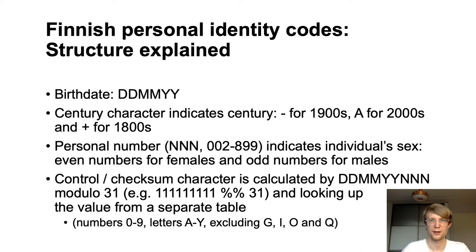The century character has three valid options: a dash for the 1900s, A for the 2000s, and a plus sign for the 1800s. The personal number indicates the individual's sex — even numbers for females and odd numbers for males. The control or checksum character is calculated by dividing the date and individual number put together with the number 31, and using the remainder value to look up the correct character from a separate table.